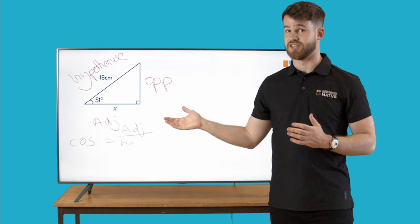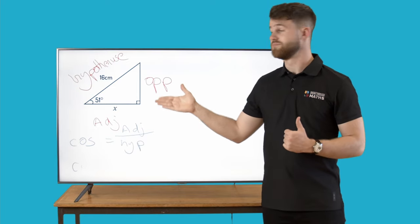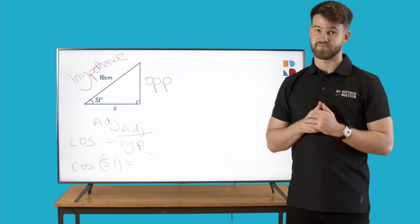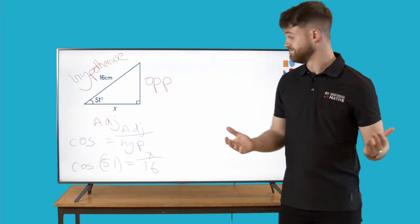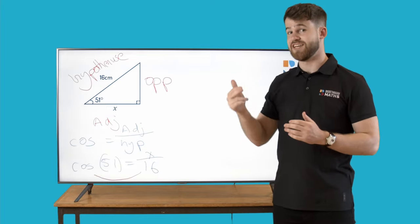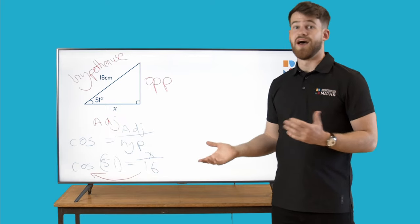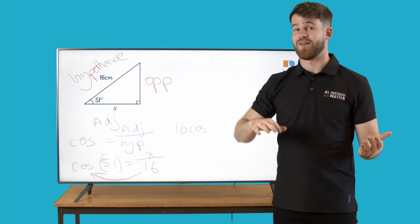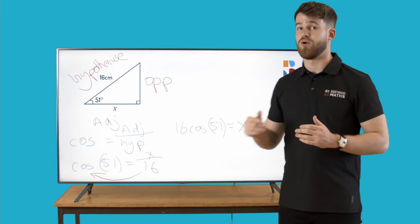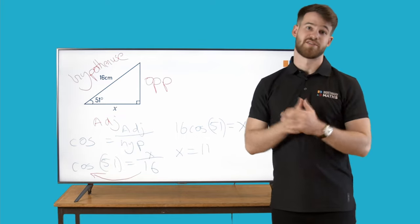Then we can make an equation here in this question. Cos of 51 is equal to x over 16. Now it's just a matter of solving this out. You can multiply your 16 up and you'll get 16 cos of 51 is equal to x. And then you're just going to be putting that all into the calculator to find out what x is. If you put that all into the calculator you'll get x is equal to 11.9 centimetres.